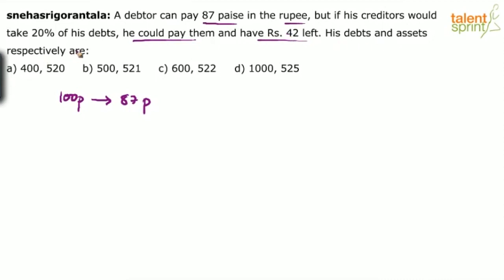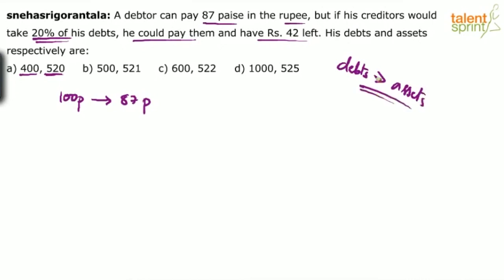His debts and assets respectively are to be found. The key point is: if 20% of his debts are taken out, he can pay that and still have rupees 42 left. Debt is your liability — whatever you have to pay — and assets is whatever you totally have with you. The critical condition here is that his debt must be greater than his assets. Only then does it make sense that after a 20% reduction in debts, he can pay and still have 42 rupees left.